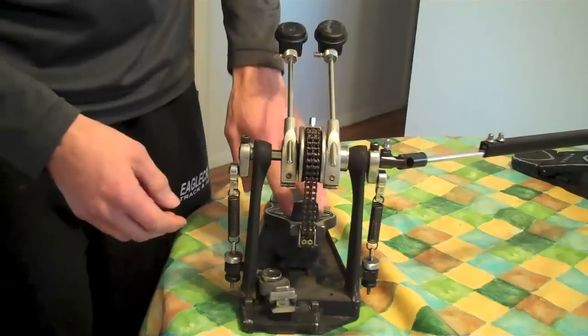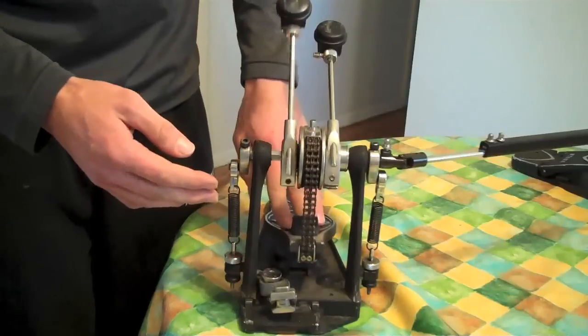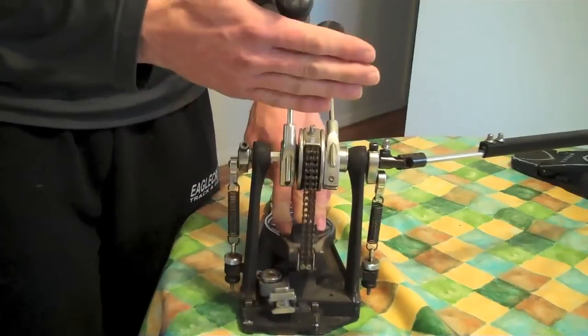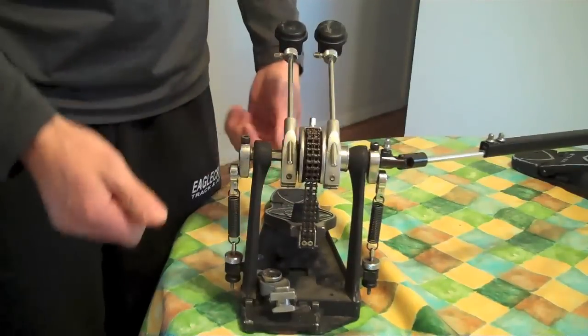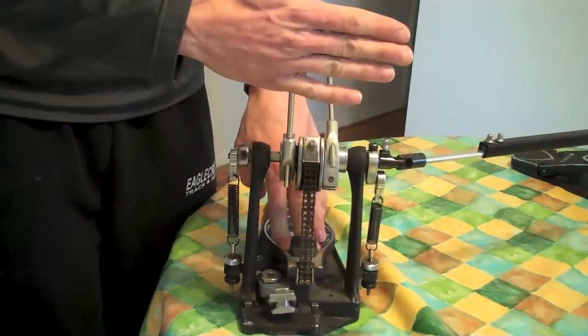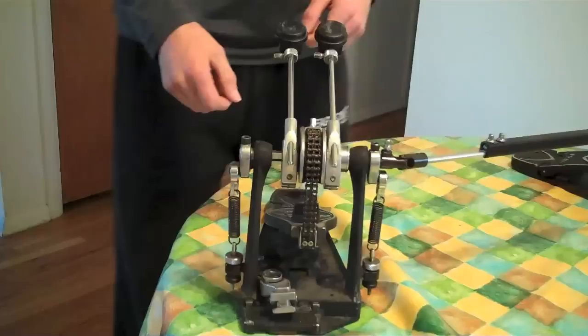Another thing to note is you can adjust the footboard height on these pedals, but you want to just make sure that when you hit the drum head, you're still clear of everything under here. If you're hitting it and getting a clicking sound, you need to raise it up a little bit because it's too low. So obviously the drum would be here and it's not hitting. Same thing for the slave pedal.